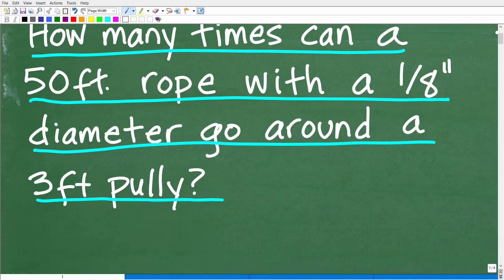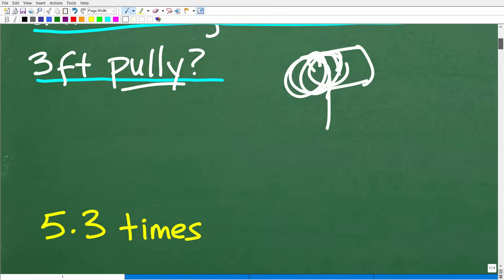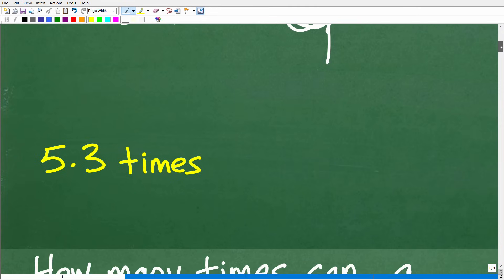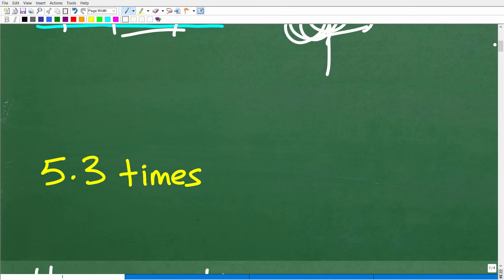We have this rope, right? 1/8 inch diameter. How many times can I go around this three-foot pulley? And just in case for those of you that don't know, a pulley is one of these little gizmos like this. And of course, it pulls up a line, it turns, right? And it's going to turn in this rope like that. So hopefully you have a basic concept what a pulley is.